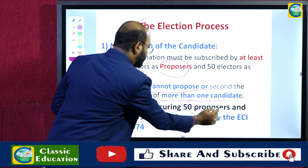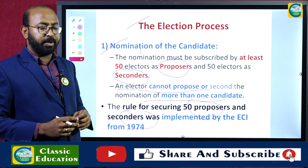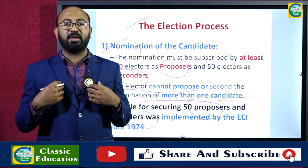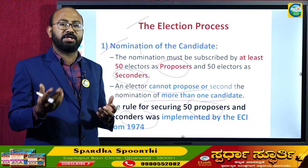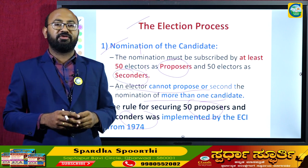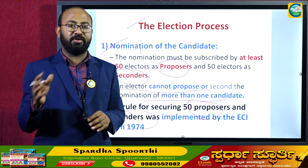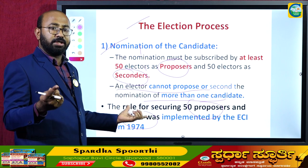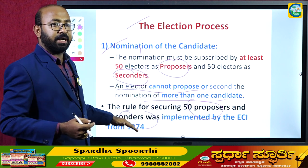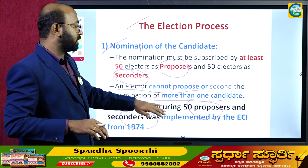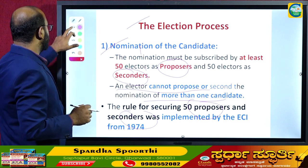The rule requiring 50 proposers and 50 seconders was implemented by the Election Commission of India in 1974. This was introduced to prevent every citizen from contesting, which would make the process too cumbersome. With this condition, only candidates backed by elected MLAs and MPs can stand, making the election process manageable.